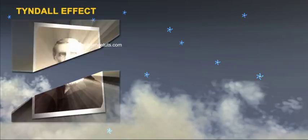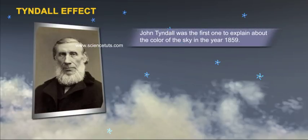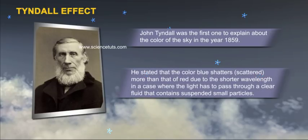Tyndall Effect. John Tyndall was the first one to explain the color of the sky in the year 1859. He stated that the color blue scatters more than red due to the shorter wavelength, in a case where the light has to pass through a clear fluid that contains suspended small particles.